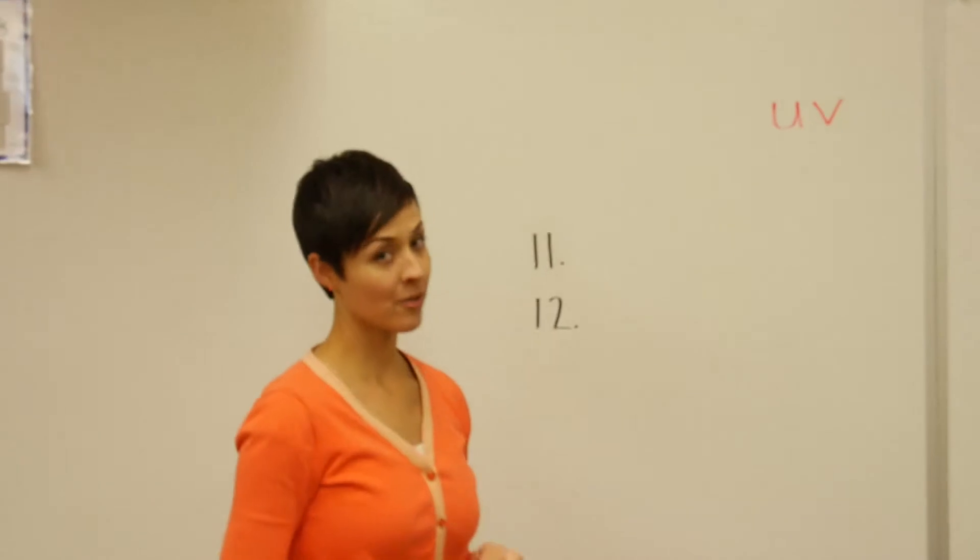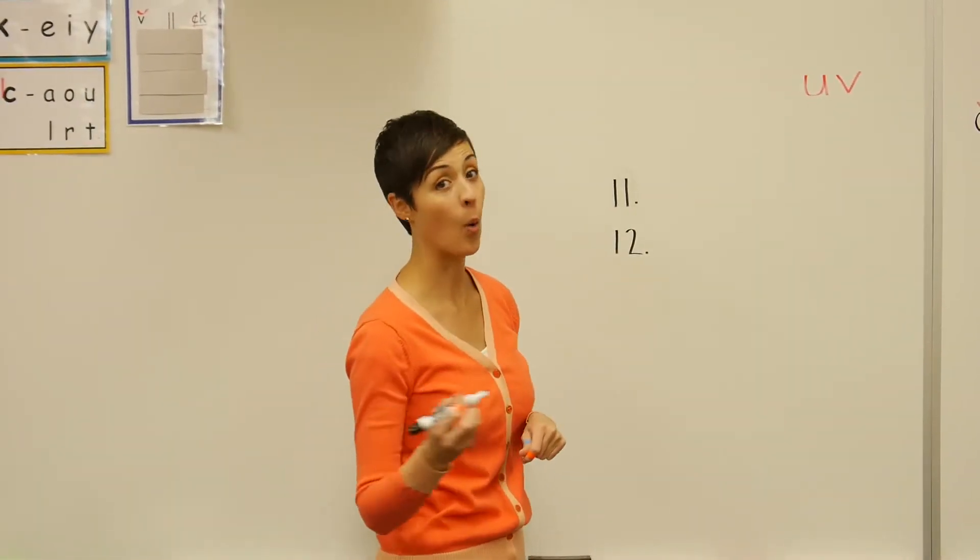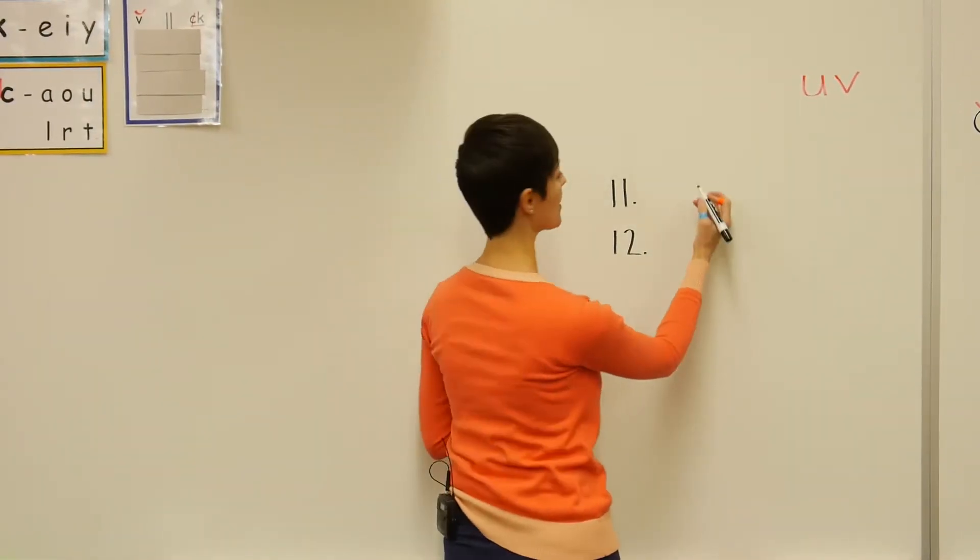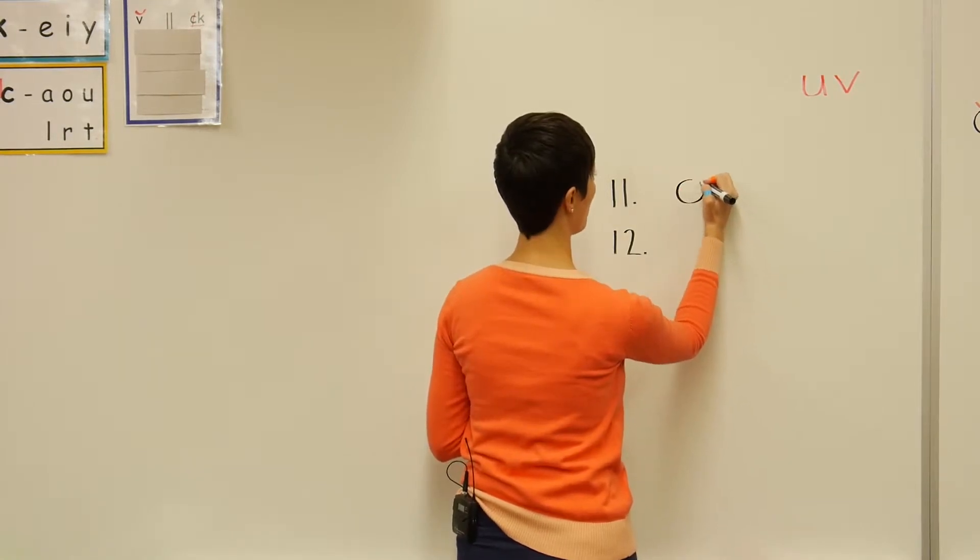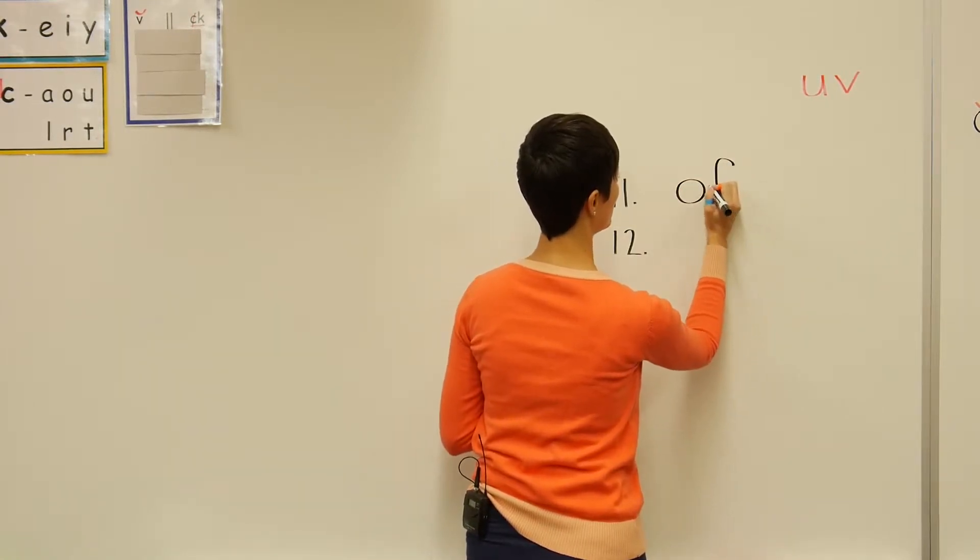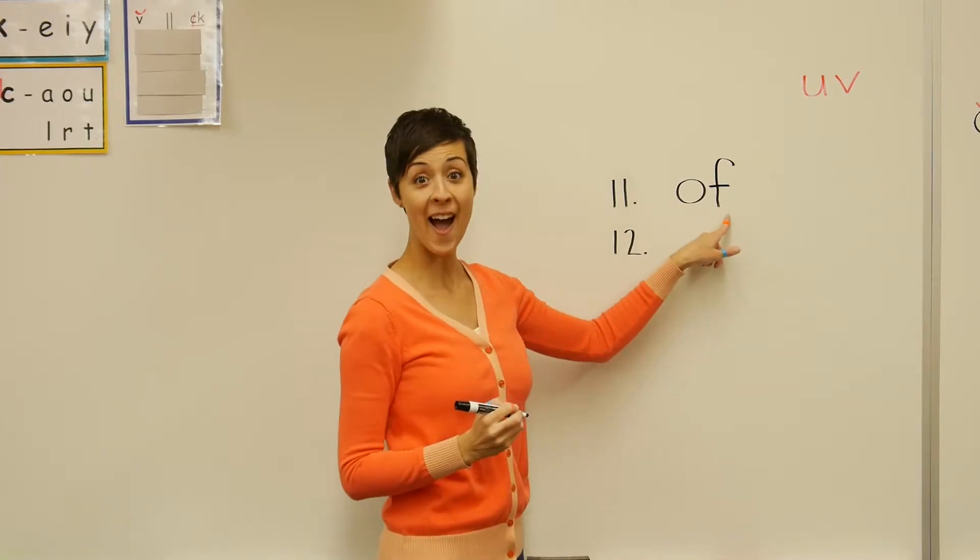How we actually spell sight word of starts with an O, and it goes O-F. That's how we spell sight word of.